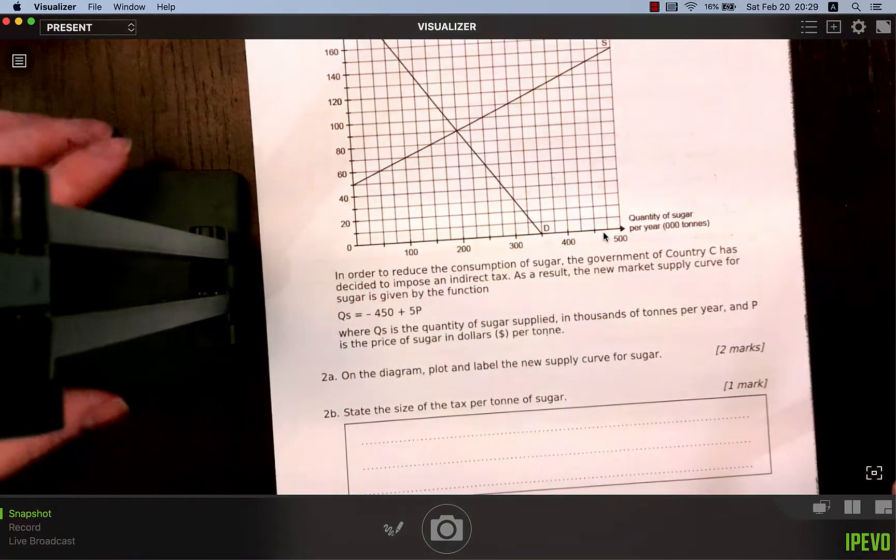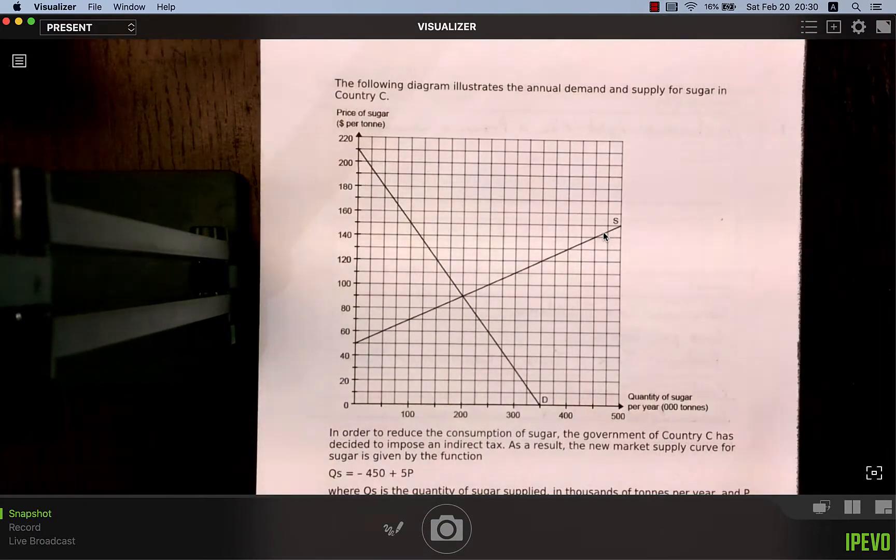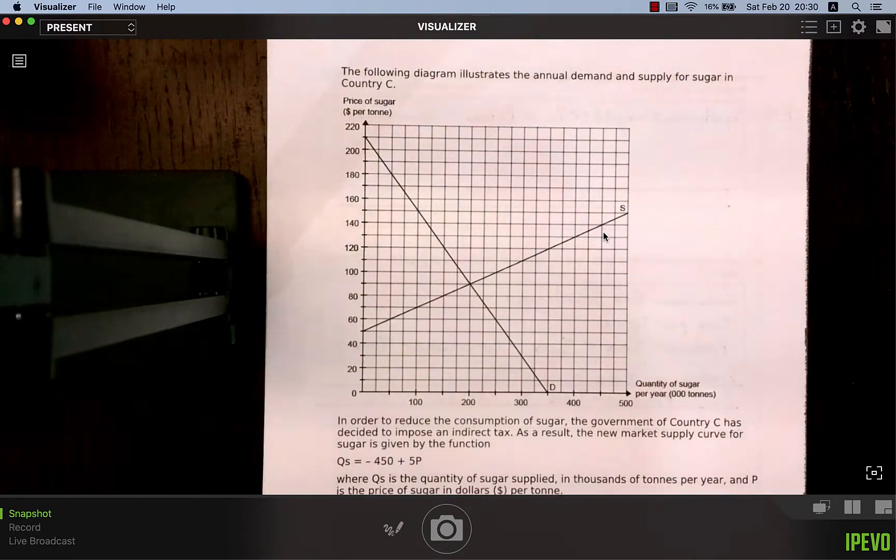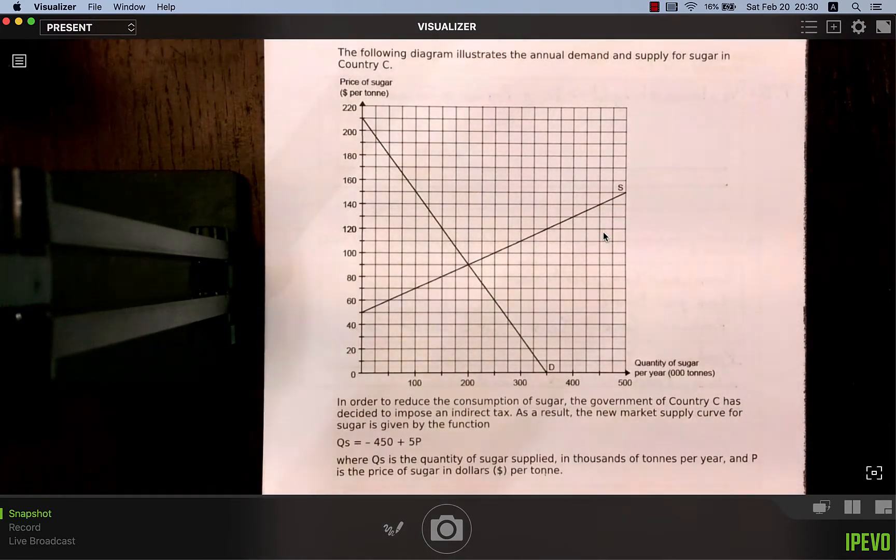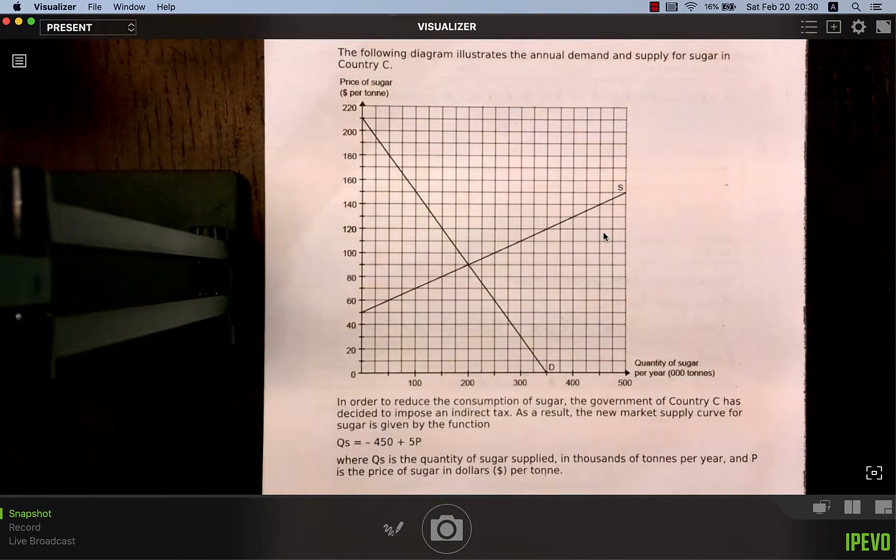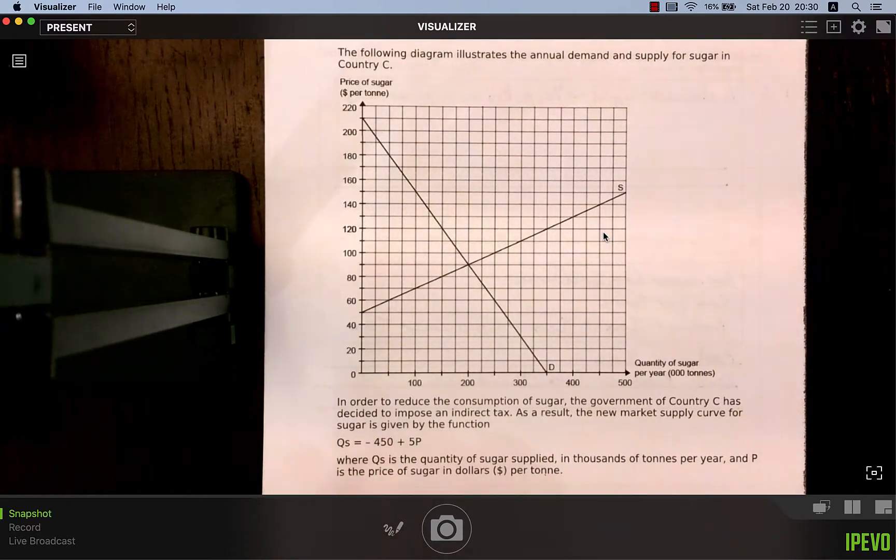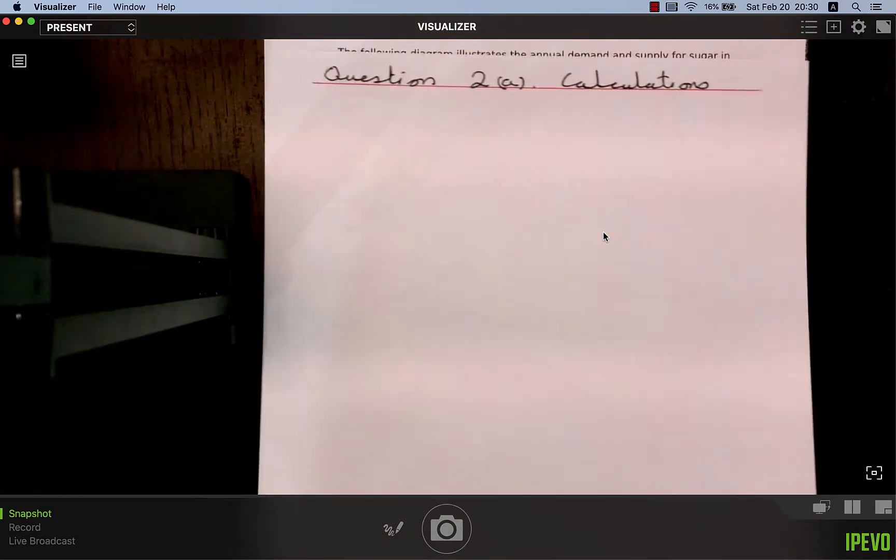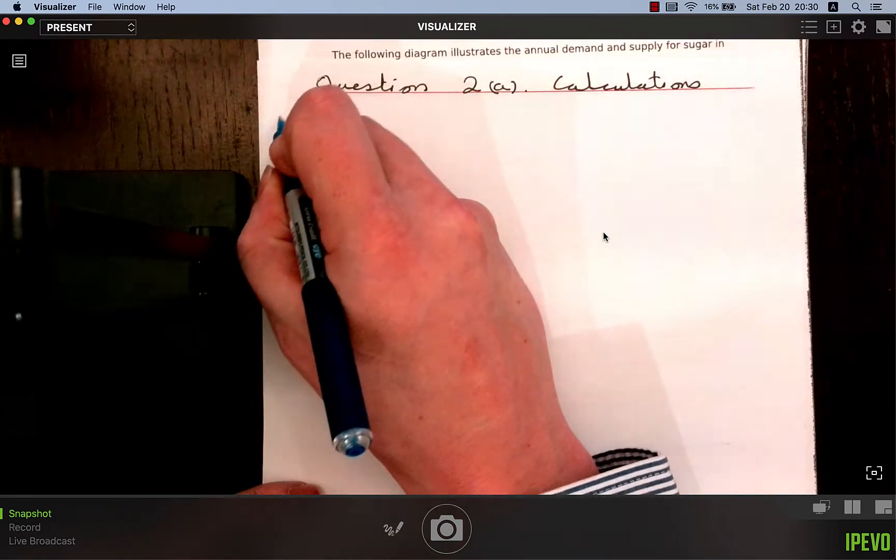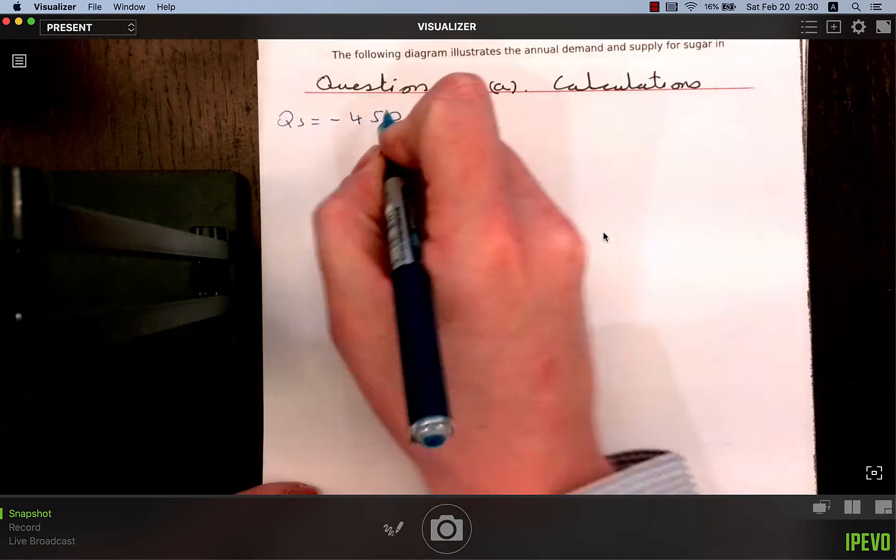With reference to figure 2, which is this one here, I stress for this question a perfectly inelastic supply curve and a downward sloping demand curve. Explain how the incidence of taxation on consumers and producers will be influenced by the price elasticity of supply. Well, there is a $10 tax per widget. It's a specific tax per good.